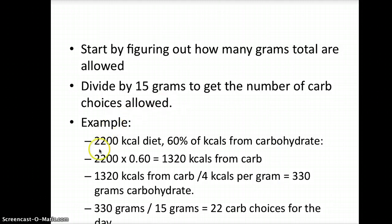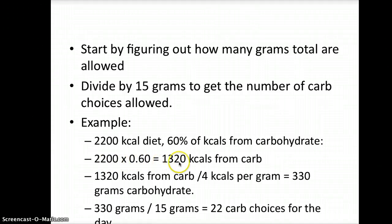For example, on a 2200 calorie diet with 60% of the kcals from carbohydrate, like we did in the problems before, you would multiply 2200 times 60%. This will give you the number of calories allowed from carbohydrate.